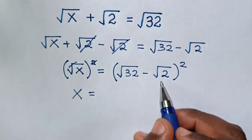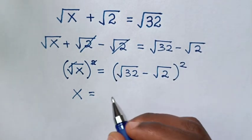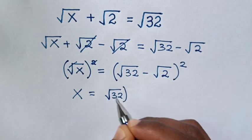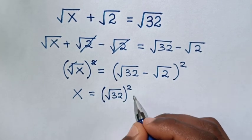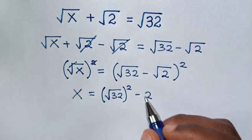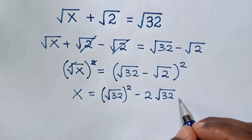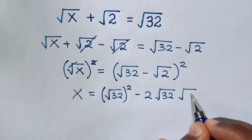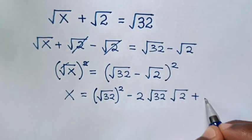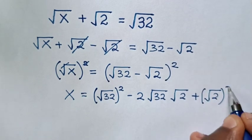Expanding: it is the same as square root of 32, bracket squared, then minus 2 times square root of 32 times square root of 2, then plus square root of 2, bracket squared.